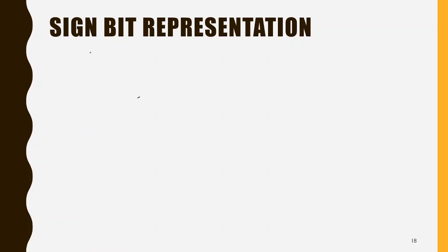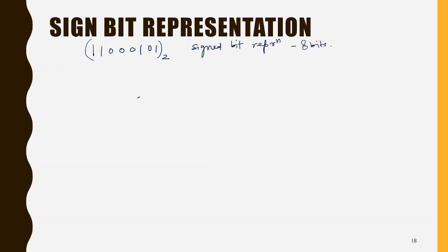Let us do the reverse of the sign bit representation right now. If I have an 8-bit binary number and it is known that it is in sign bit representation of 8 bits, seeing this you can determine that the MSB is not part of the magnitude of the number — the MSB only indicates the sign. MSB is 1, meaning the number is negative.